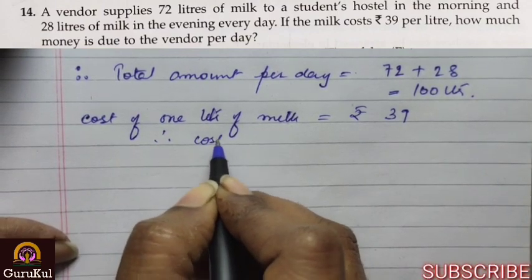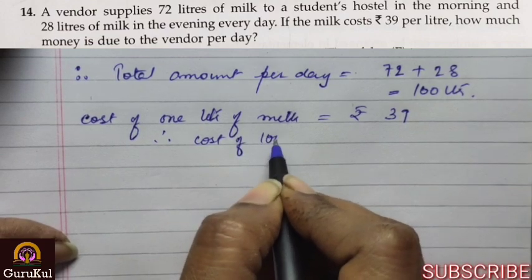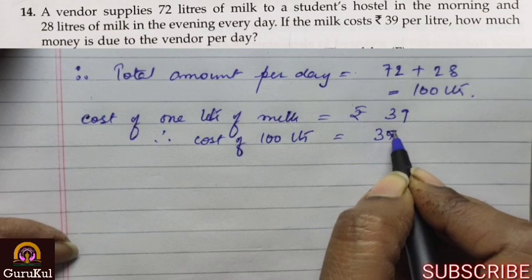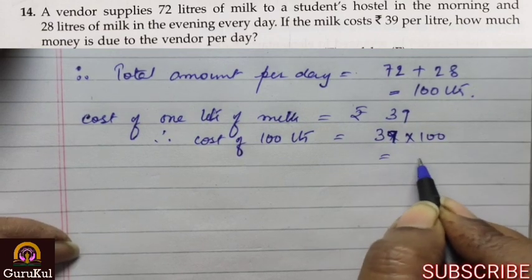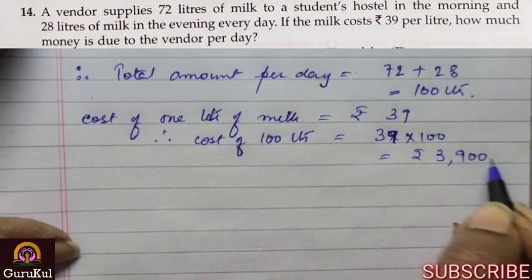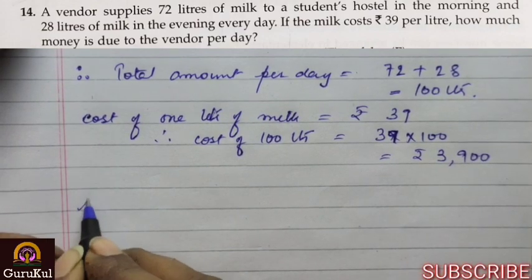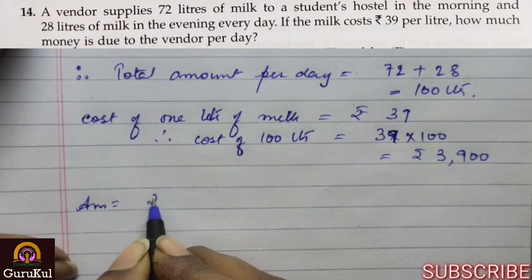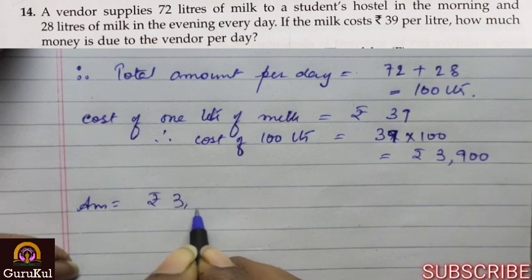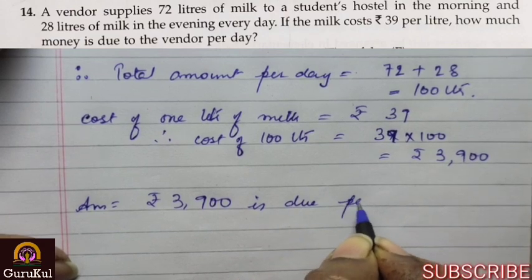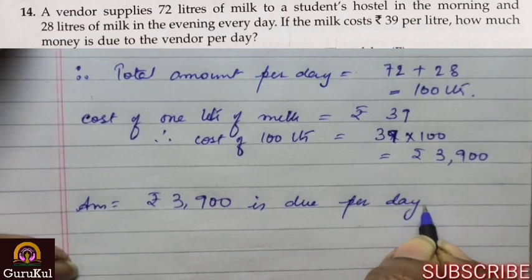They have mentioned that the cost of 1 liter of milk is Rs. 39. Therefore, cost of 100 liters will be 39 into 100 which gives us Rs. 3900. So Rs. 3900 is due per day.